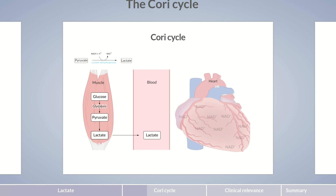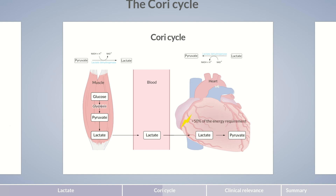In cardiac muscle cells, there's an excess of NAD+, so the cells can use the lactate circulating in the bloodstream and absorb it. In cardiac muscle cells, lactate dehydrogenase converts lactate back into pyruvate. This produces the reducing equivalent NADH and H+, which can be used for ATP synthesis. By the way, during physical activity, cardiac muscle cells meet more than half of their energy requirements through the oxidation of lactate. So this is an example of how lactate can be used as a source of energy.